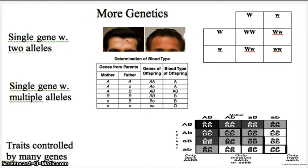Both parents pass alleles for traits on to their offspring. We get stuff from our mom and we get stuff from our dad. There are around 30,000 or so different traits that we could get from either one. The traits we see are determined by more than just what you see in a normal Punnett square — they're determined by a variety of inheritance patterns.